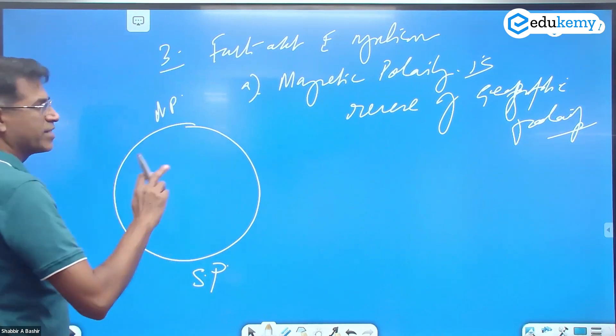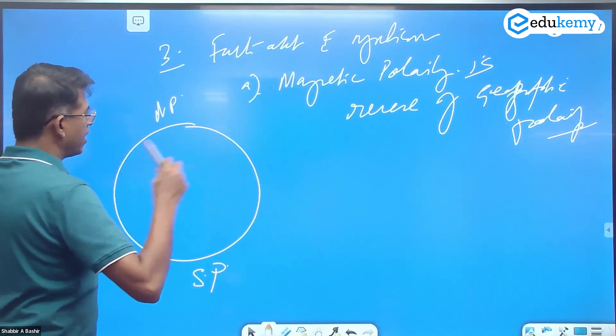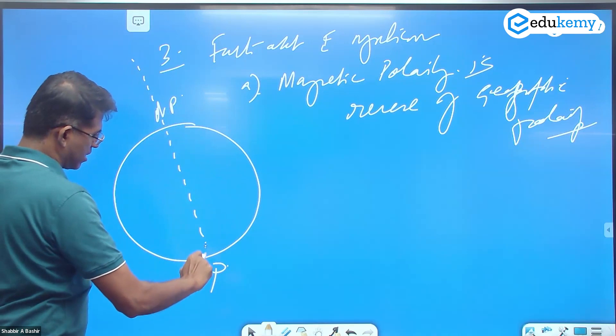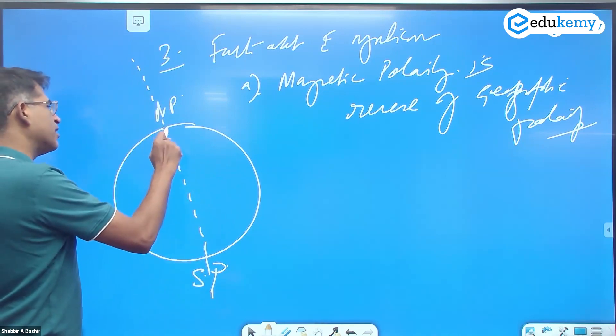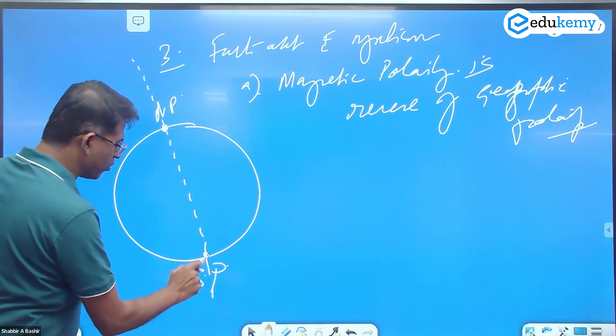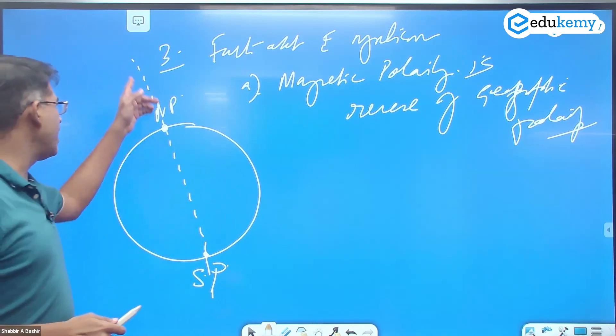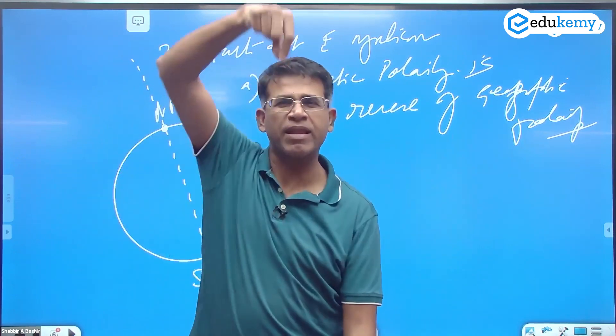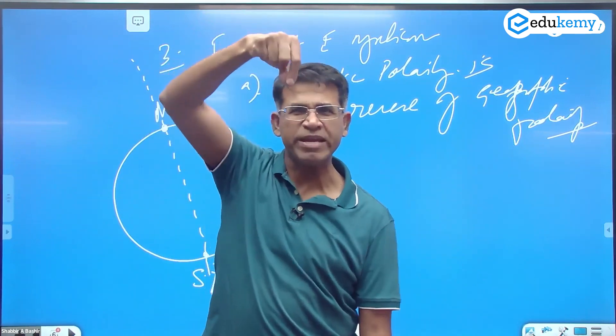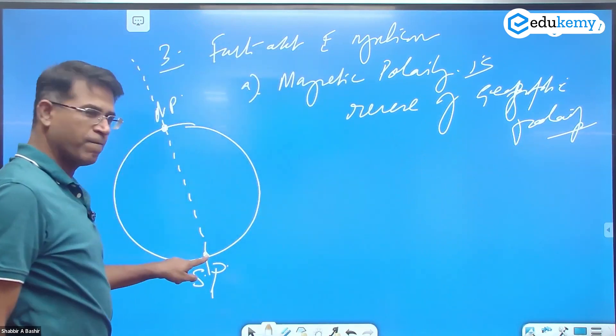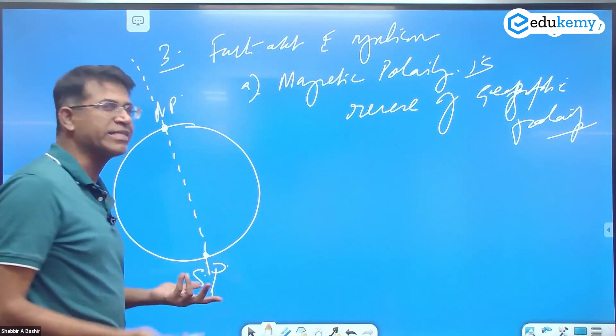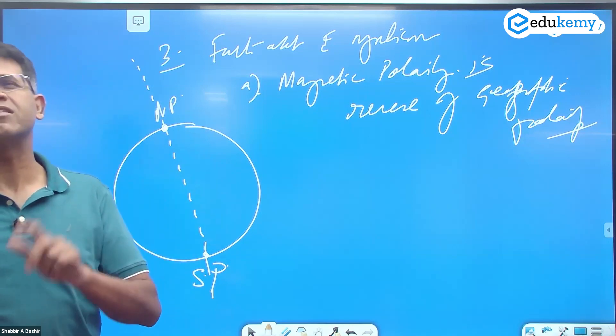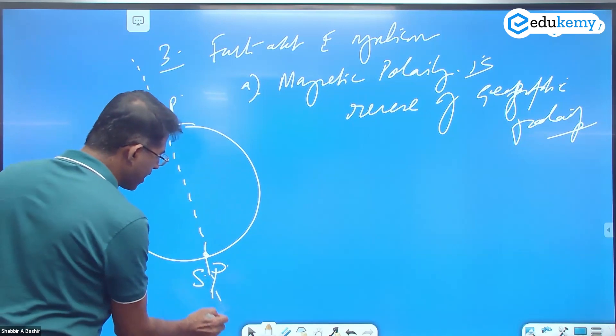So essentially, Earth is rotating about an axis. Where the axis is meeting the surface, this is called the pole. This line is imaginary. Some of you got that right - Earth is spinning about some line, and where that line meets, that's the pole. North is the north pole, south is the south pole.